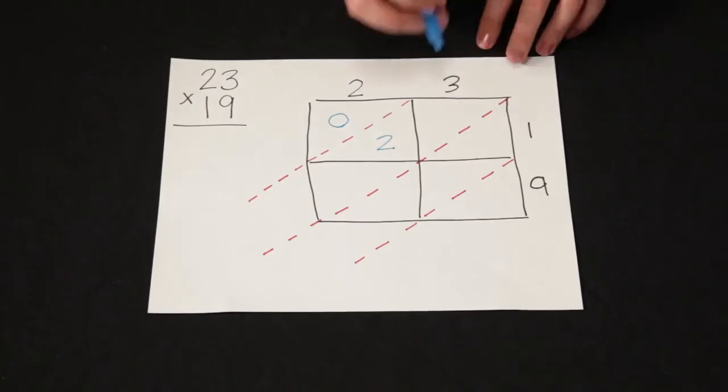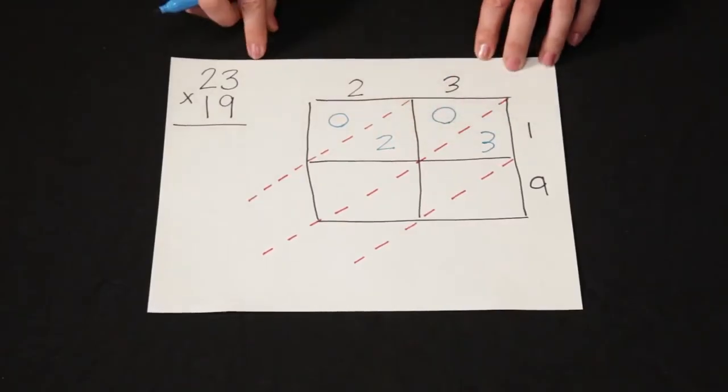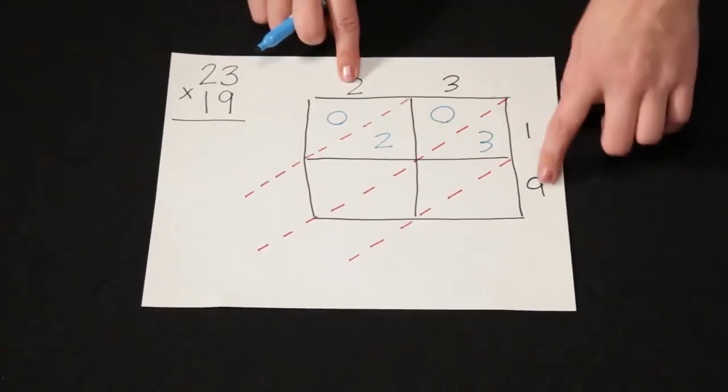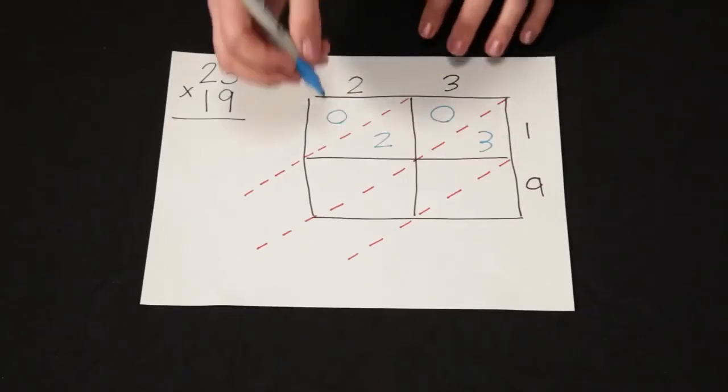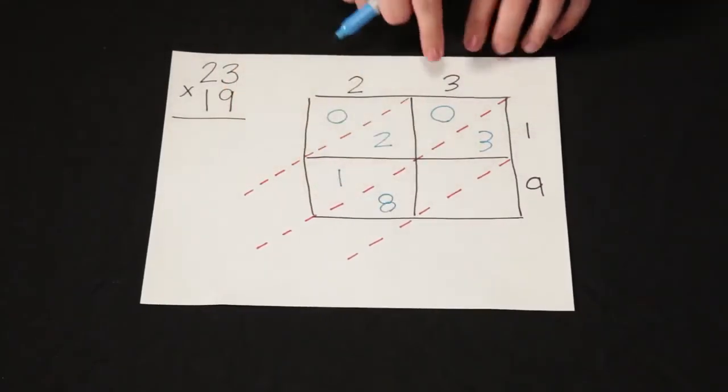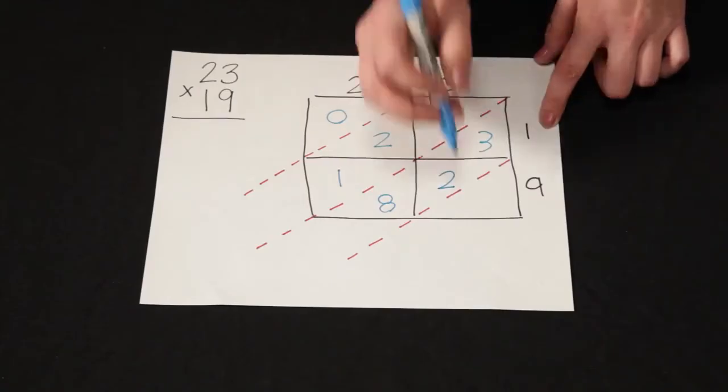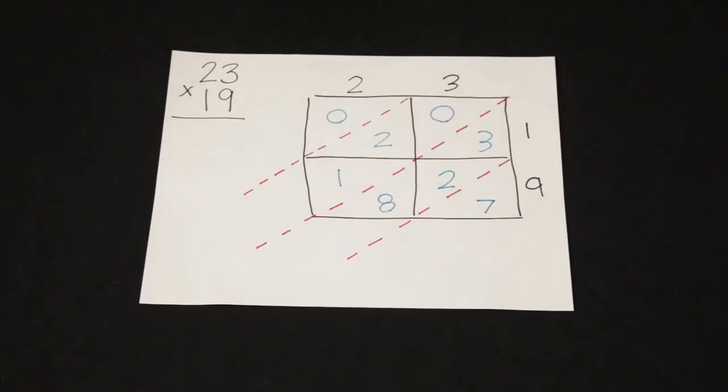Three times one is three. Zero sets of ten and three ones. Now two times nine is eighteen. One set of ten and eight ones. And three times nine is twenty-seven. Two sets of ten and seven ones.